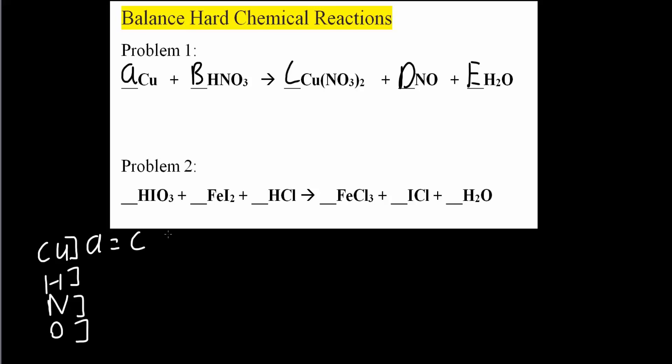Next, we'll do H. Where do we have H here in the reactant side? We have it for B. So we say B is equal to. Now where do we have H here? In this case, we have two H's for E. So we say two E.